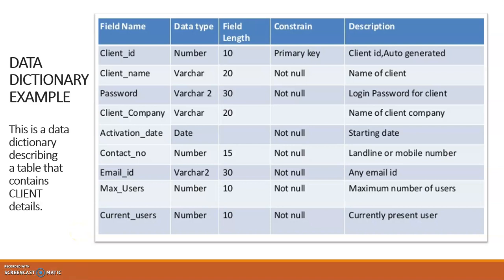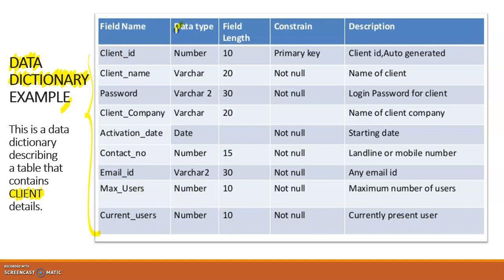In this session we are going to learn about the data dictionary. A data dictionary is a kind of table or format which describes your actual database table. For example, here I have a client table in the database, and this table contains fields with their data types, field length, constraints, and description.